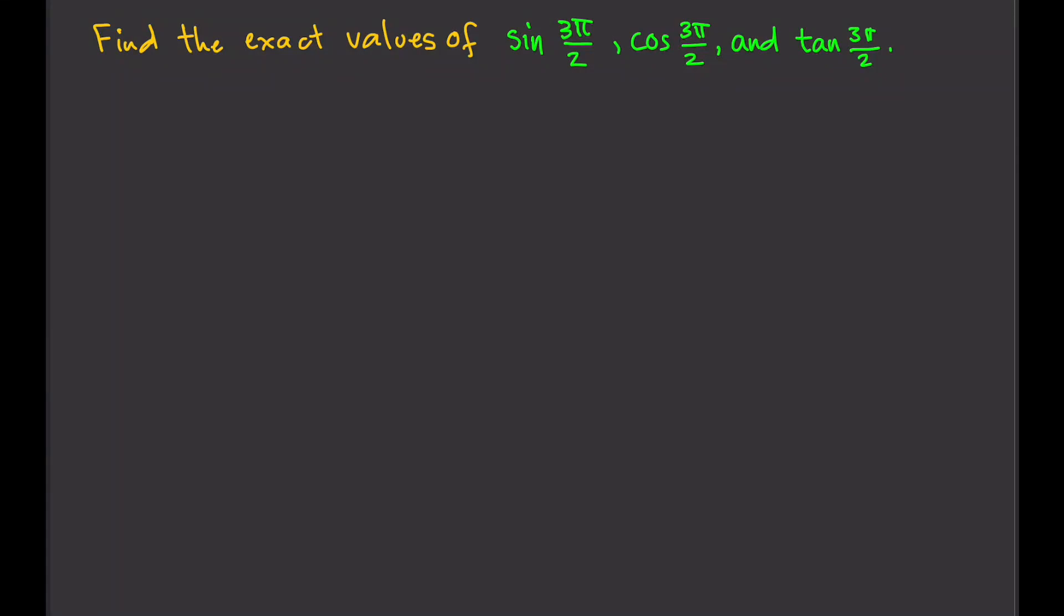Find the exact values of sine 3π/2, cosine 3π/2, and tangent 3π/2. We're going to locate 3π/2 in the unit circle. But in this case, 3π/2 is in radians.